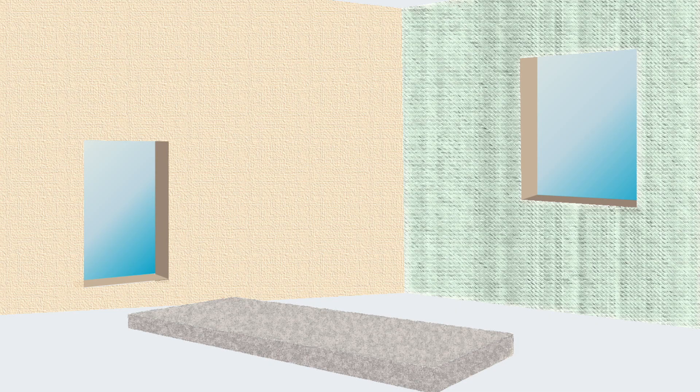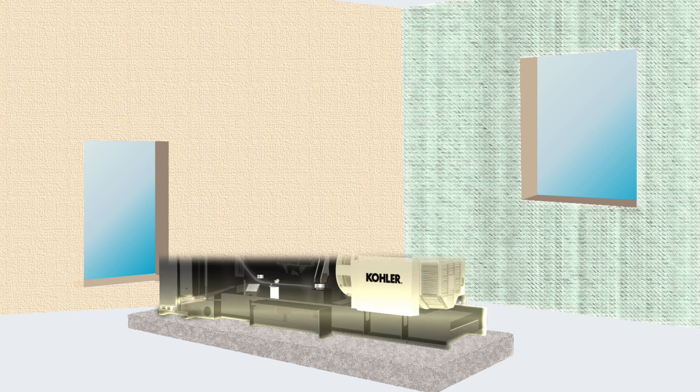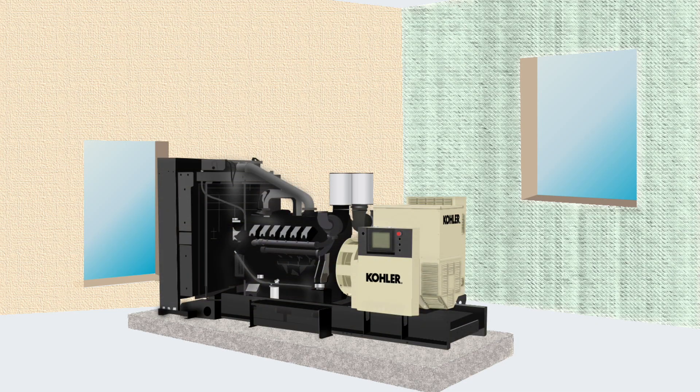First, let's cover installation of the generator with mounted radiator. A typical generator room will have openings for air inlet and outlet. A concrete base will be prepared to the manufacturer's specifications, to which the generator is mounted using the required anchors.